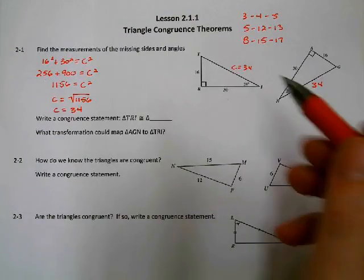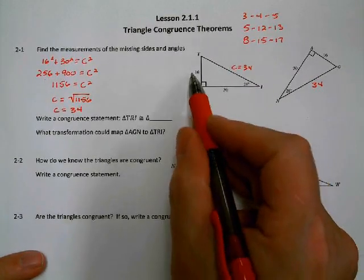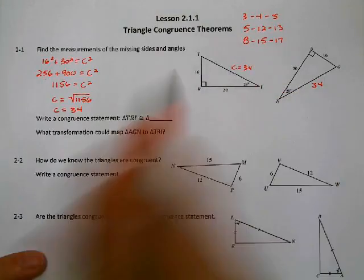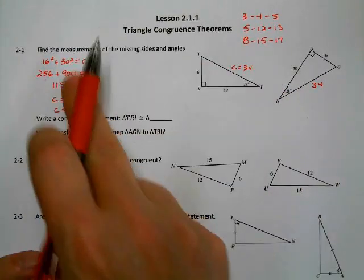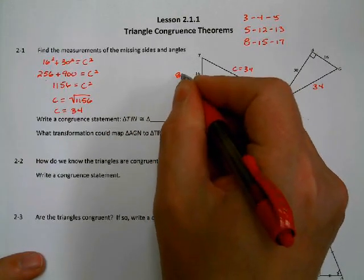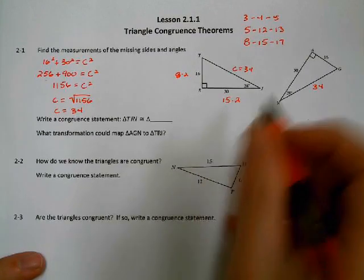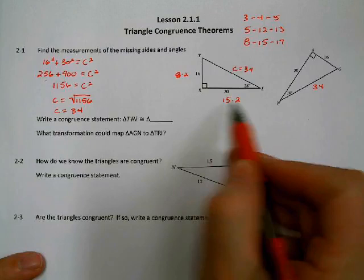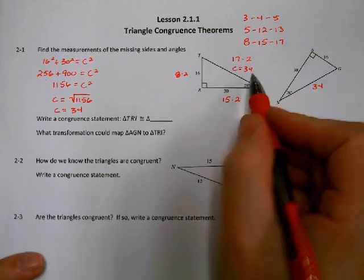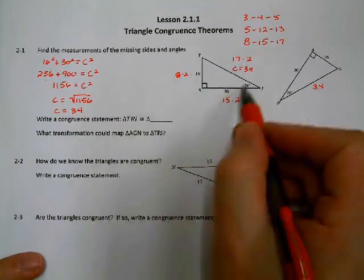Technically what we're looking at here is an 8-15-17 triangle, but all the numbers have been multiplied by 2. So if you know your Pythagorean triples, you can find your answers quickly without doing the full Pythagorean theorem. This side is 8 times 2 (which is 16), this side is 15 times 2 (which is 30), so the last side should be 17 times 2 — and it is, it's 34.